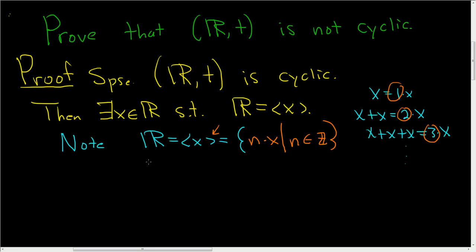Now we have to come up with a real number that is not in this set. That's pretty easy. So let's, for example, look at 1 half x. 1 half x is a real number. You can take a real number, divide it by 2, you still get a real number.